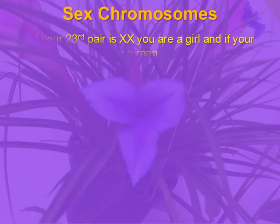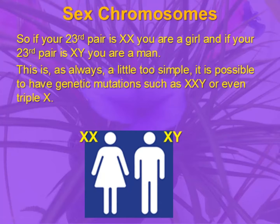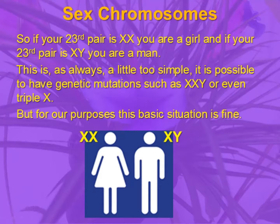If your 23rd pair is XX, then you will be a woman, and that means you got an X chromosome from your mum and an X chromosome from your dad. If your 23rd pair is XY, then you will be a man, and you got an X chromosome from your mum and a Y chromosome from your dad. This is a little simple, obviously, and there are rare but actual genetic mutations where some people have two X chromosomes and a Y chromosome, or even a triple X chromosome. These things can happen, but for our purposes, this basic situation is fine.